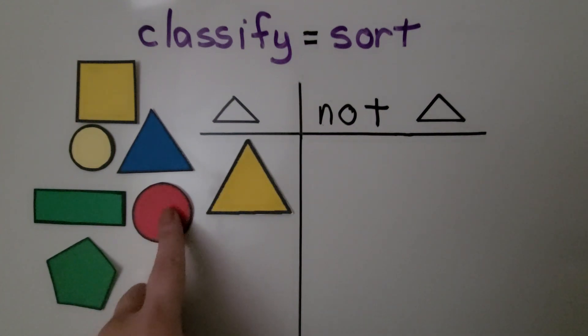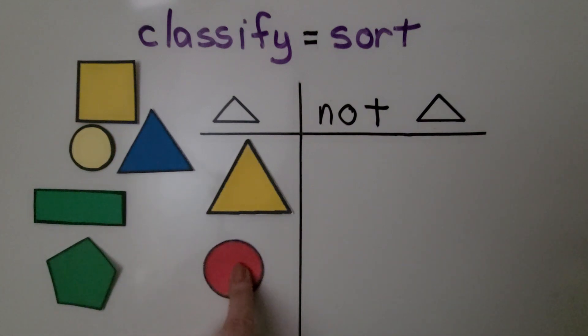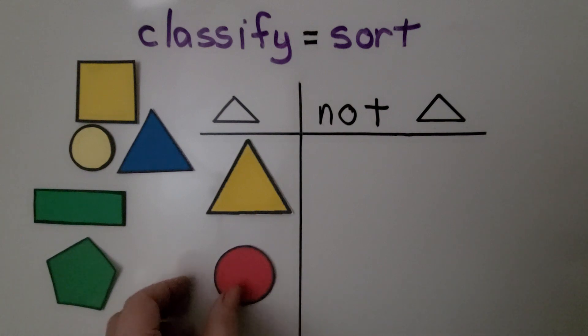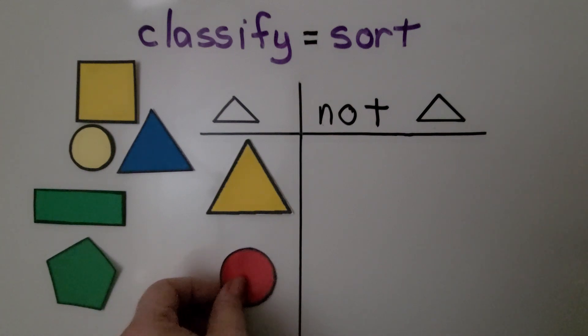Is this a triangle? No, that's a circle. It's round — it has a curve.